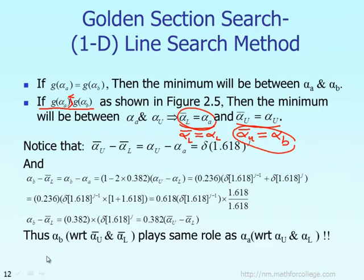There's a third possibility: f(alpha A) is neither less than nor greater than f(alpha B), meaning it must equal f(alpha B). In that case, both the new lower bound and the new upper bound have to be updated to alpha A and alpha B respectively. So 99% of the time you update either the new lower bound or the new upper bound, and once in a while you may have to update both.